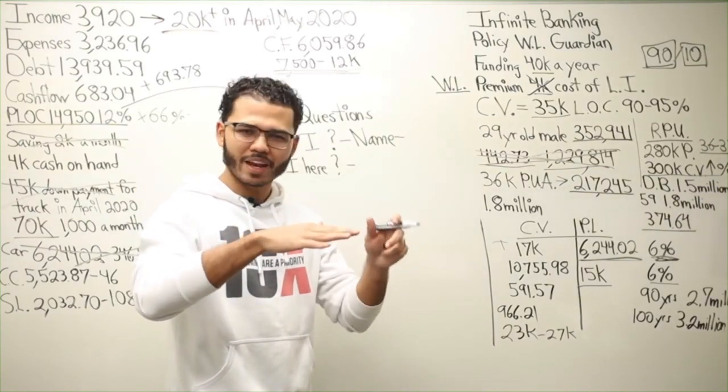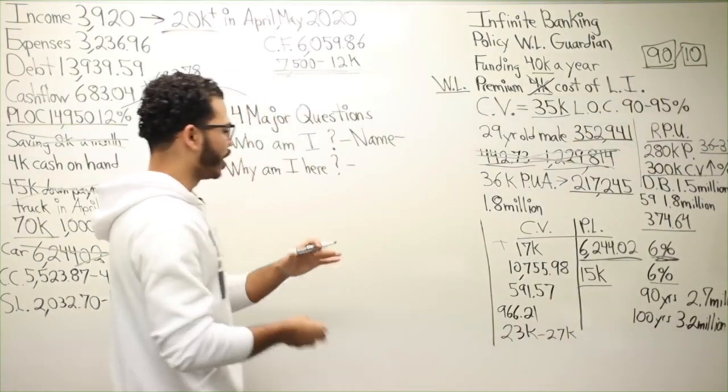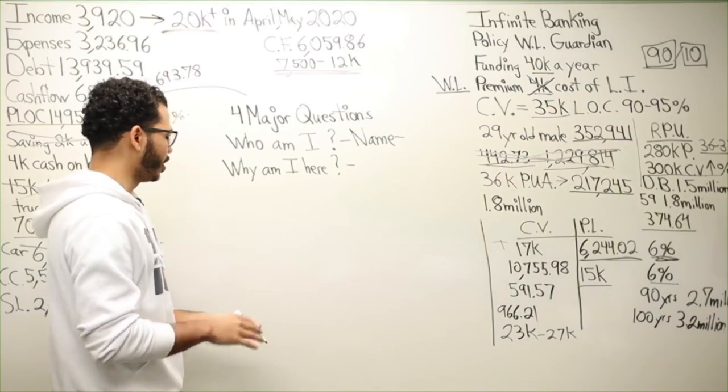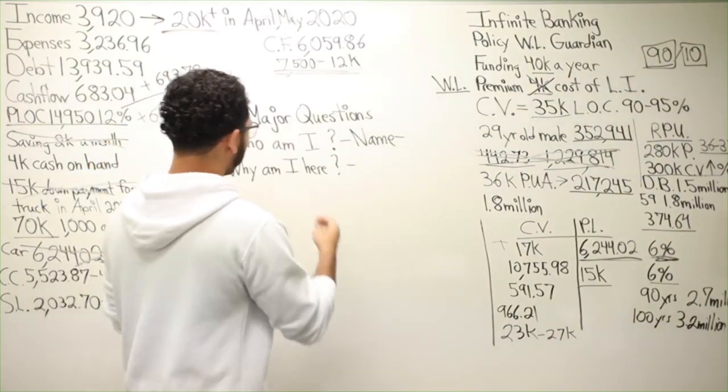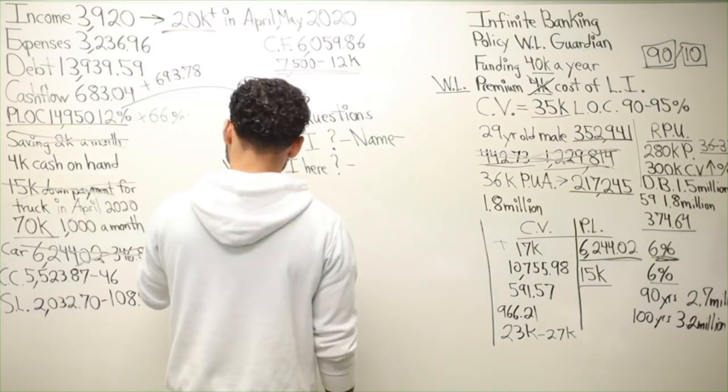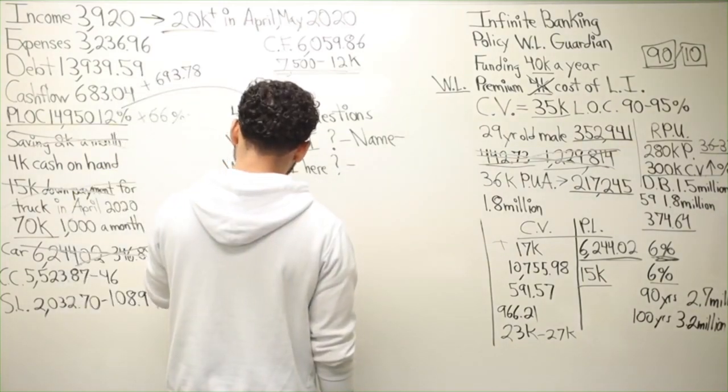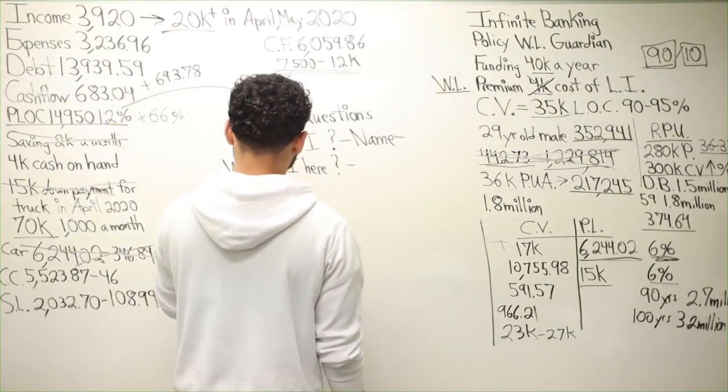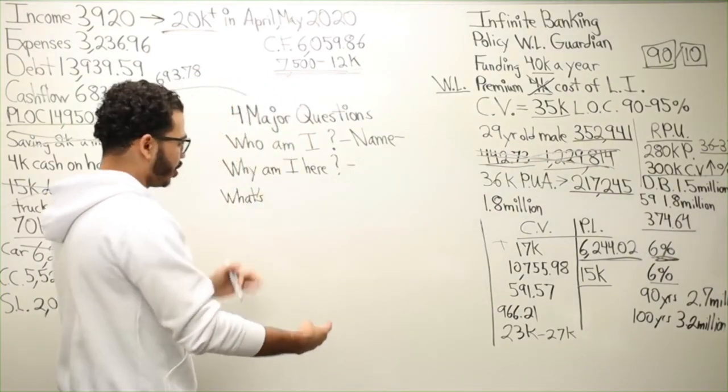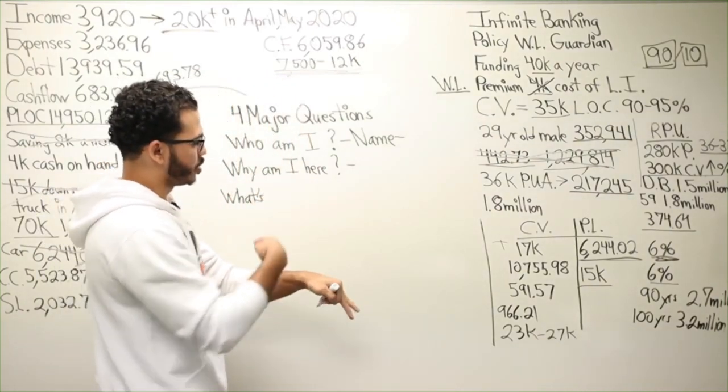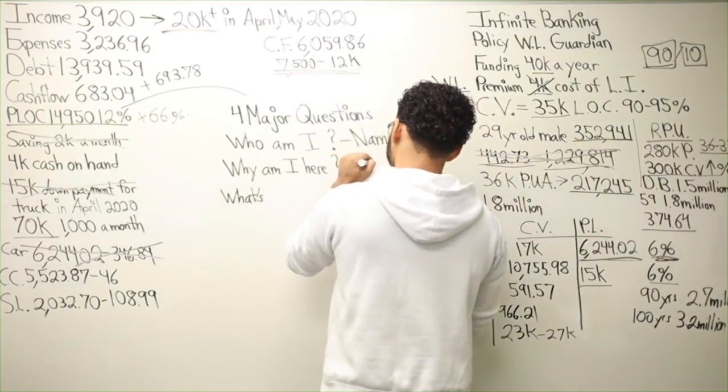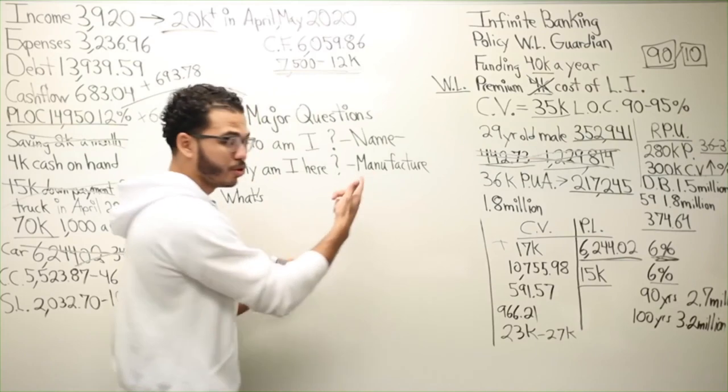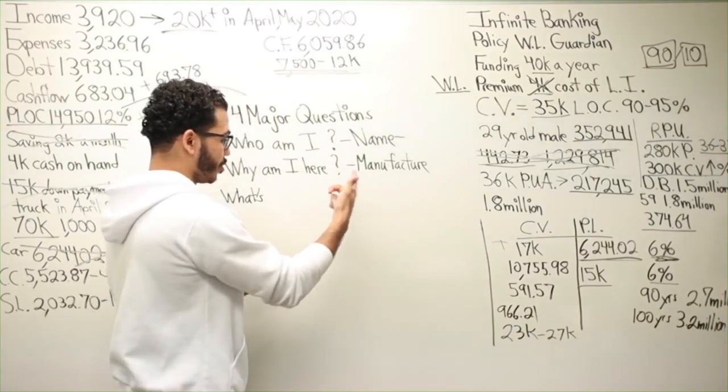...a little metaphysical, right? Is that what it's called? We get a little into the quantum, into the science, into the spiritual. So why am I here? Once you've figured out who am I and why you're here, the way you answer that question is by figuring out who the manufacturer is. You got to find out who the manufacturer is, who made you.